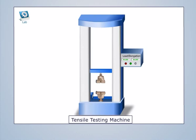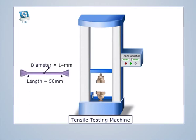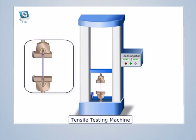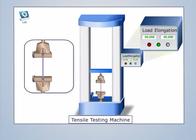Let us now perform an experiment to understand the stress-strain diagram more clearly. We will apply a tensile load on a shaft made of mild steel with a diameter of 14 mm and a length of 50 mm, applying load until the shaft breaks. When a load is applied on the shaft, it elongates to some extent, and we need to note down the readings for load and elongation.